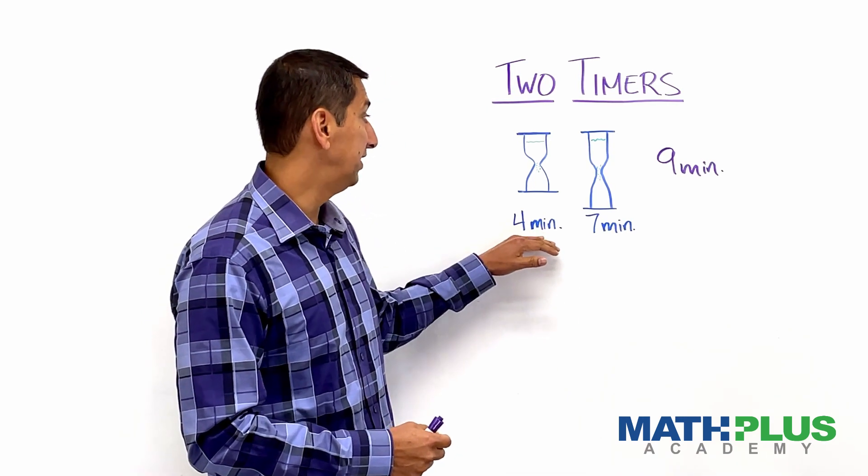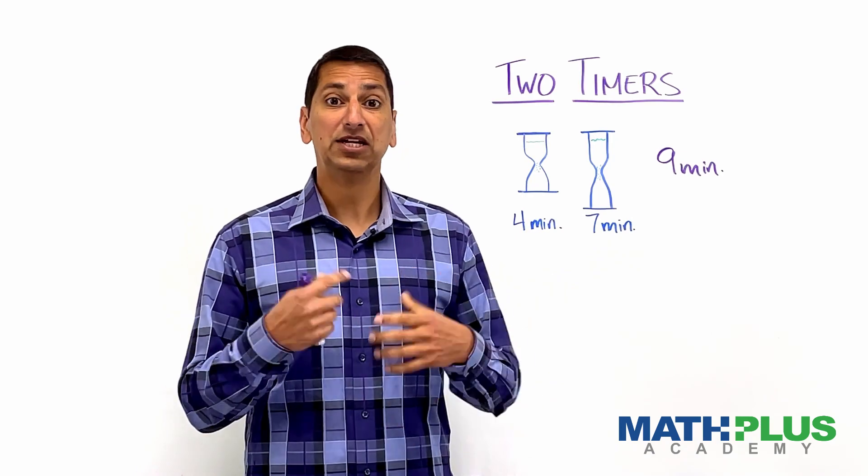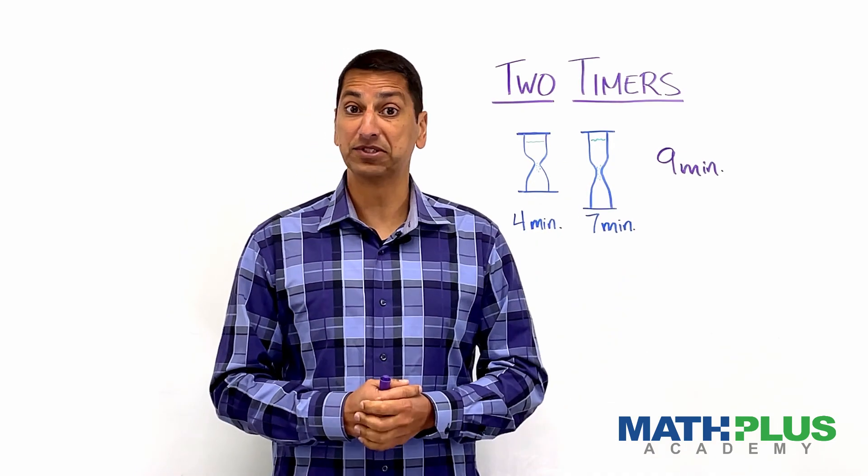Flip this one over for four minutes. When it finishes, flip that one over and get another seven minutes. So there are clearly a list of numbers that you can make.